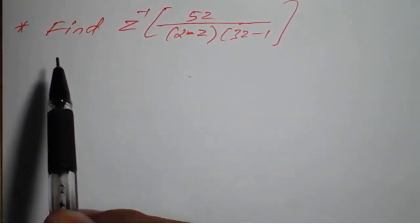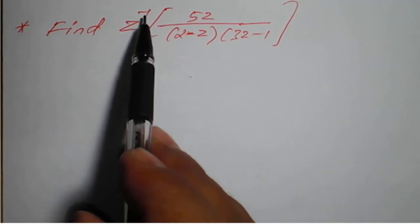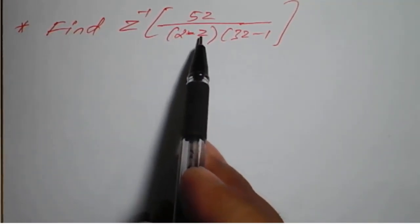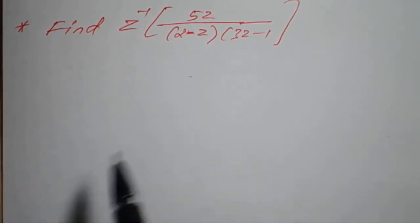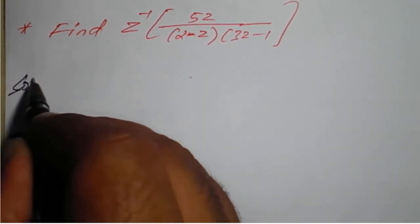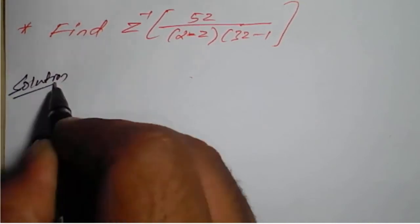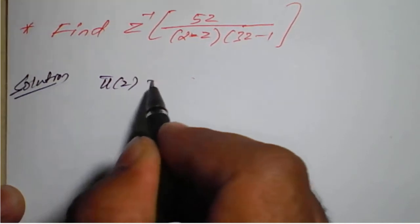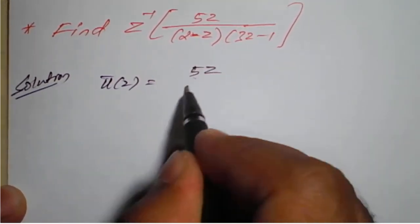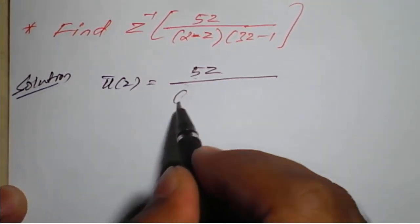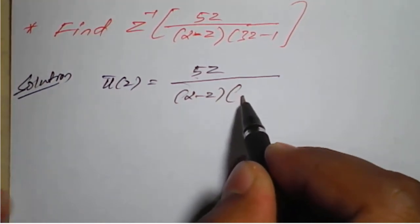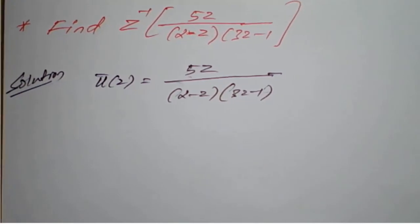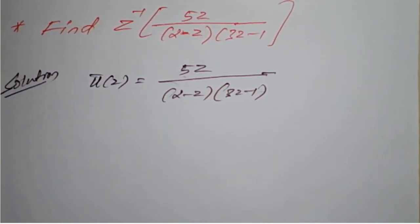Hello students. The problem is: find the inverse Z-transform of 5z divided by (2 minus z) into (3z minus 1). For the solution, we consider u'(z) is equal to 5z divided by (2 minus z) into (3z minus 1).